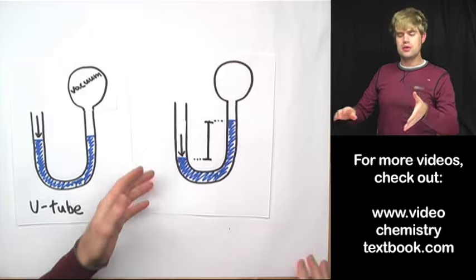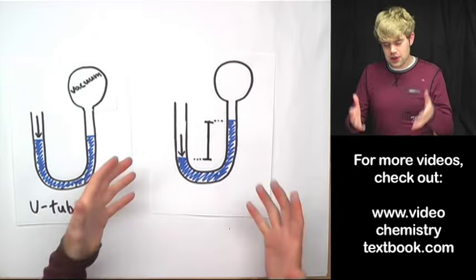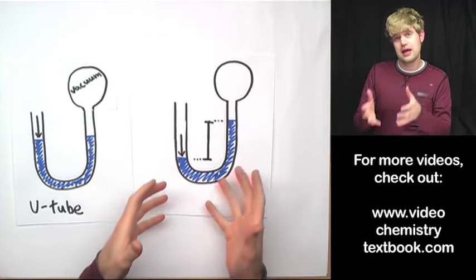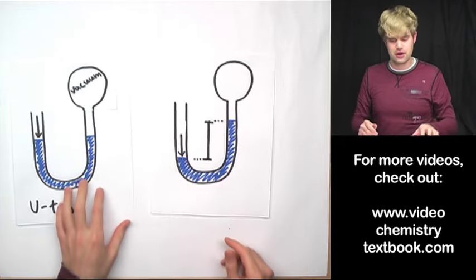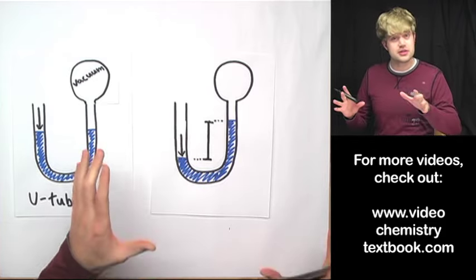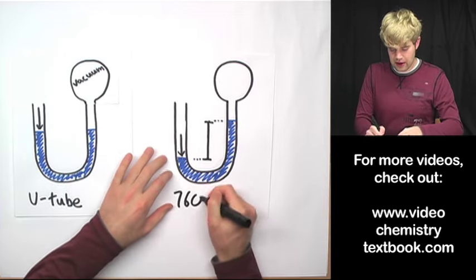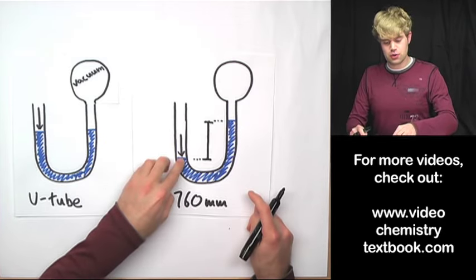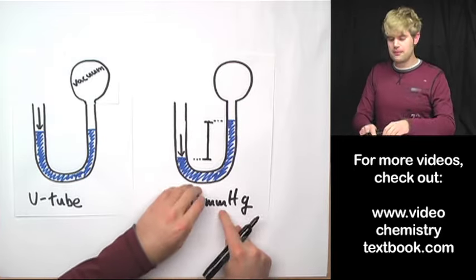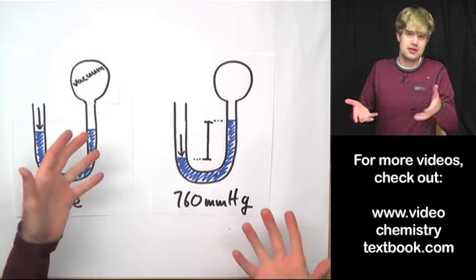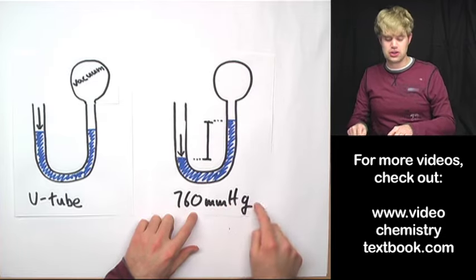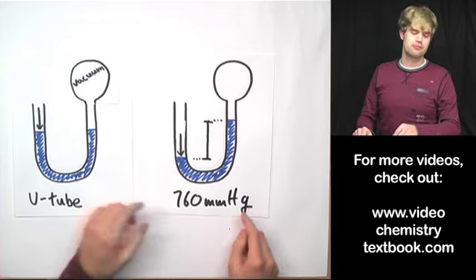In practice, people tend not to use water in the U-tube — they use a liquid metal called mercury. Mercury is much more dense than water, which makes it easier to work with for pressure measurements. If we use mercury and do this at sea level, we get 760 millimeters between the bottom and the top. Since it's mercury, we write millimeters Hg, where Hg is mercury's elemental symbol. If we used water instead, the distance would be much greater and we'd say millimeters H₂O, but we'll focus on millimeters of mercury.